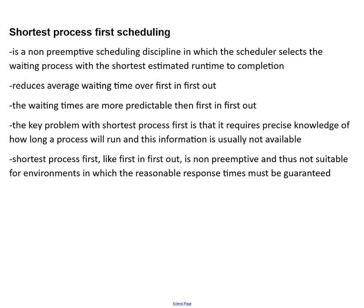Shortest process first scheduling is a non-preemptive scheduling discipline in which the scheduler selects the waiting process with the shortest estimated runtime to completion. It reduces the average waiting time over first in, first out, and waiting times are more predictable. The biggest problem is it requires precise knowledge of how long a process will run, and we really usually don't know that. Like first in, first out, it's non-preemptive and thus not suitable for environments in which reasonable response times must be guaranteed. How are we going to sell a game if people are waiting for their turn?